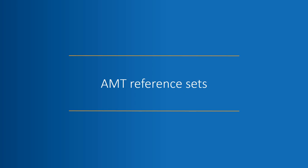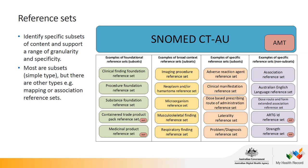Let's talk about reference sets, a term you will often hear when people talk about SNOMED CT AU. Reference sets are extensions to the terminology for a specific purpose — they identify subsets of content and support a range of granularity and specificity. The most common reference sets are subsets, where we create small, bite-sized chunks of the terminology to help with implementation. There are also other types such as mapping or association reference sets, where information can be added to the terminology that's not part of the modelling. All of SNOMED CT AU, which includes the AMT, is also provided as reference sets for implementation.